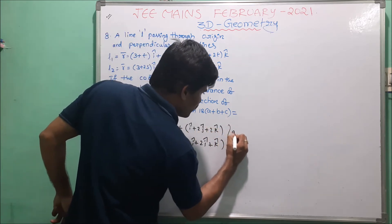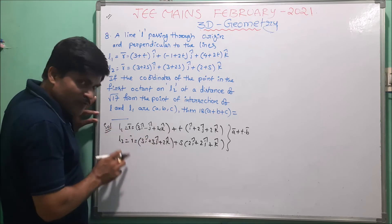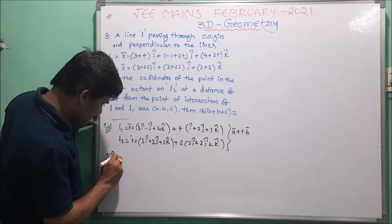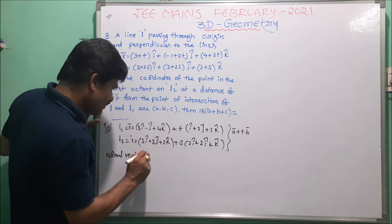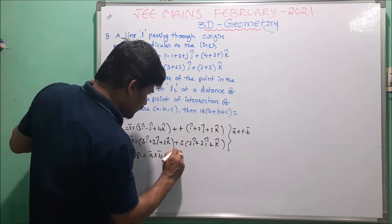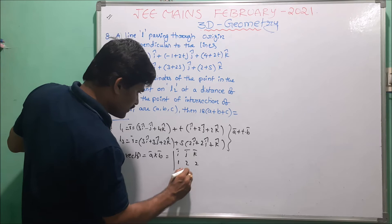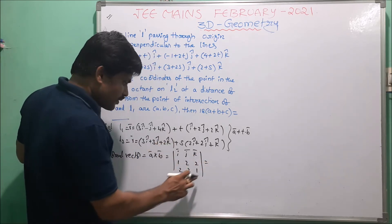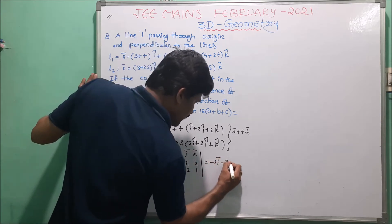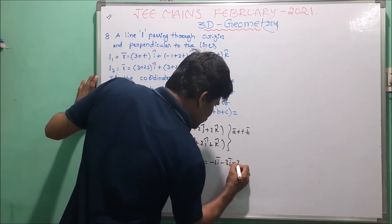These lines are in the form A bar plus t times b bar — the vector equation of a line. First we find the normal vector of line L, which is perpendicular to both L1 and L2. Normal vector equals the cross product of the two parallel direction vectors. Taking the determinant of i cap, j cap, k cap with rows (1, 2, 2) and (2, 2, 1): we get (2 minus 4)i minus (1 minus 4)j plus (2 minus 4)k = minus 2i plus 3j minus 2k.